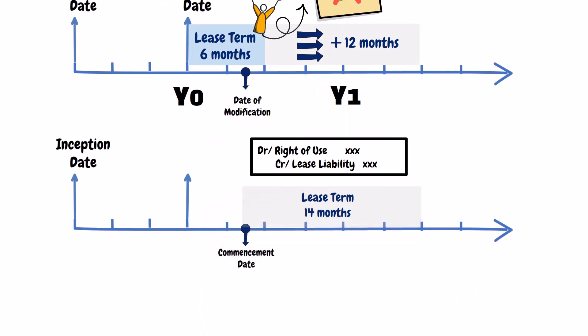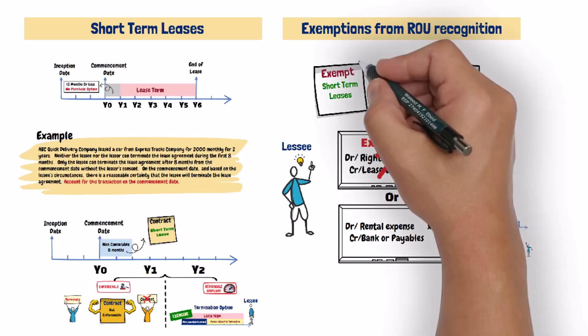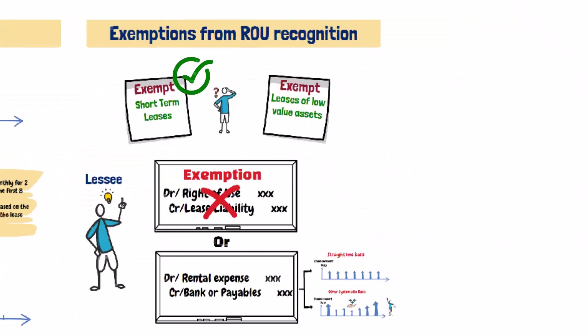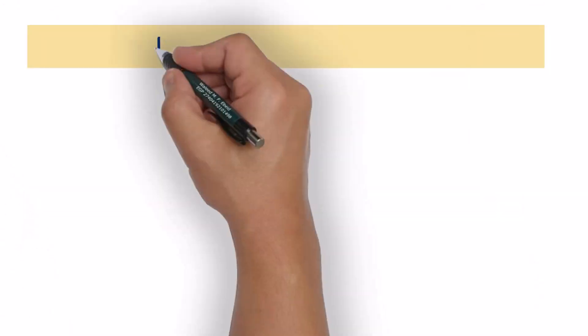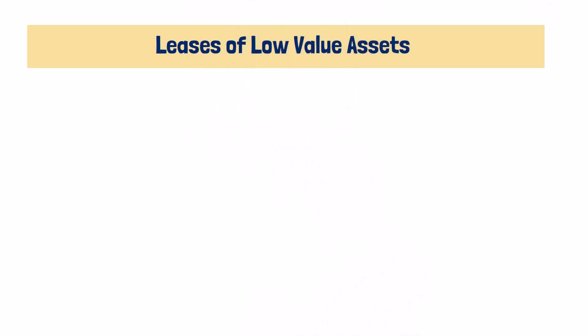That is all for short-term leases. Now let us move to the second type of leases that are exempt from the requirement to recognize a right-of-use asset — leases of low value assets.